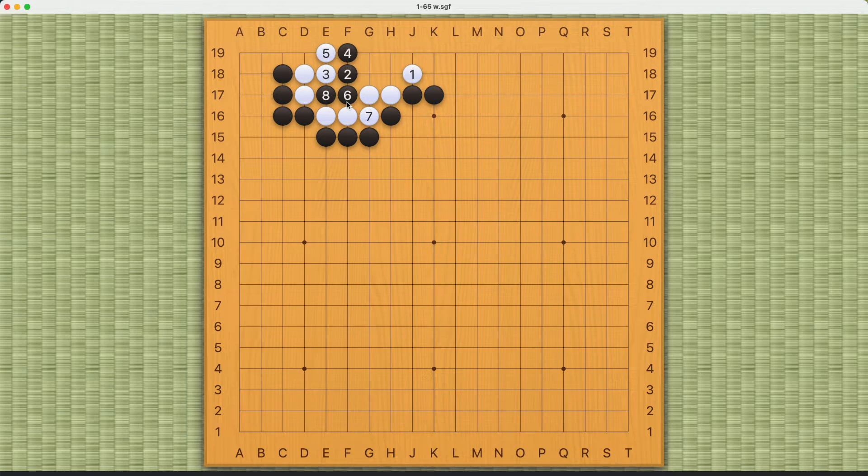If white plays here now, black can bend here and white cannot come in. Otherwise black will be able to capture white this way. So that's why number three here will not work.